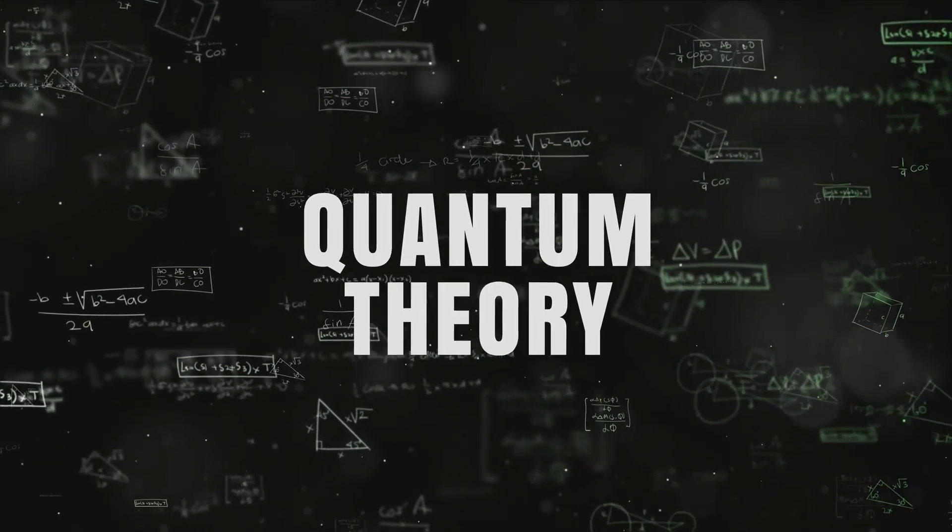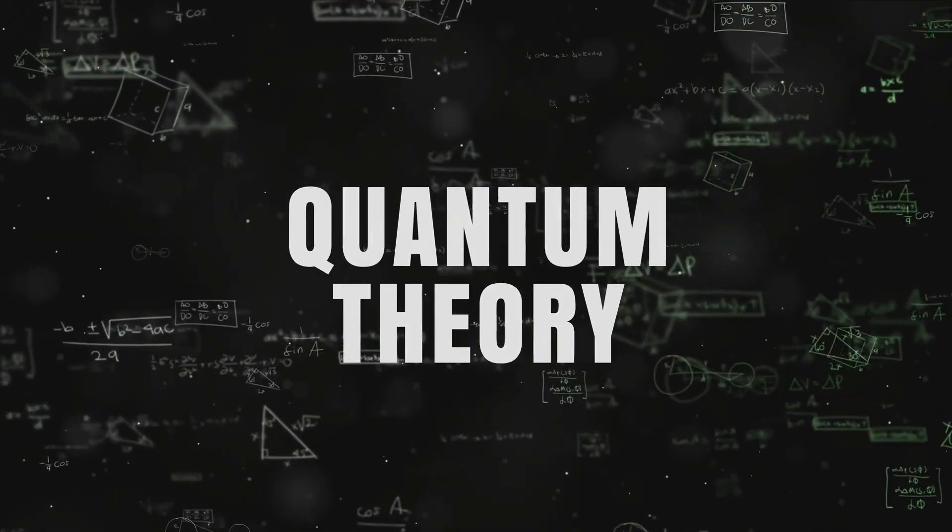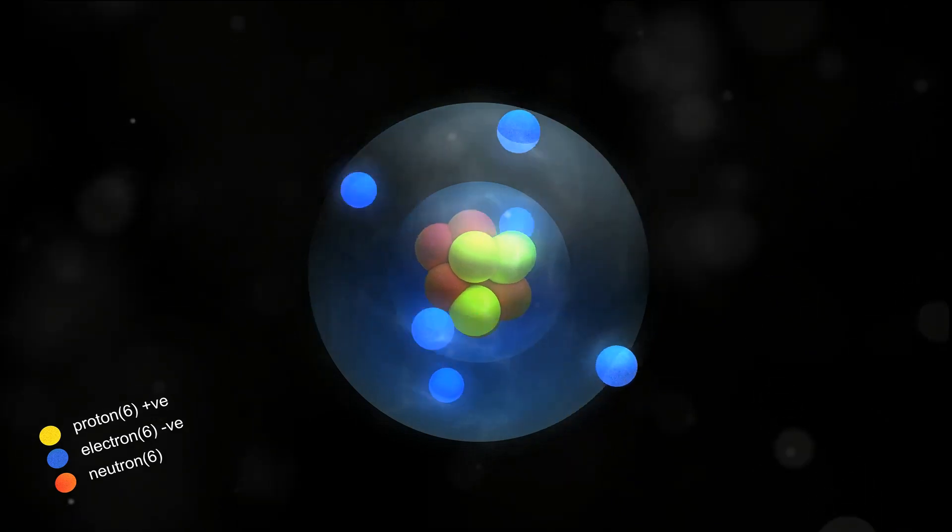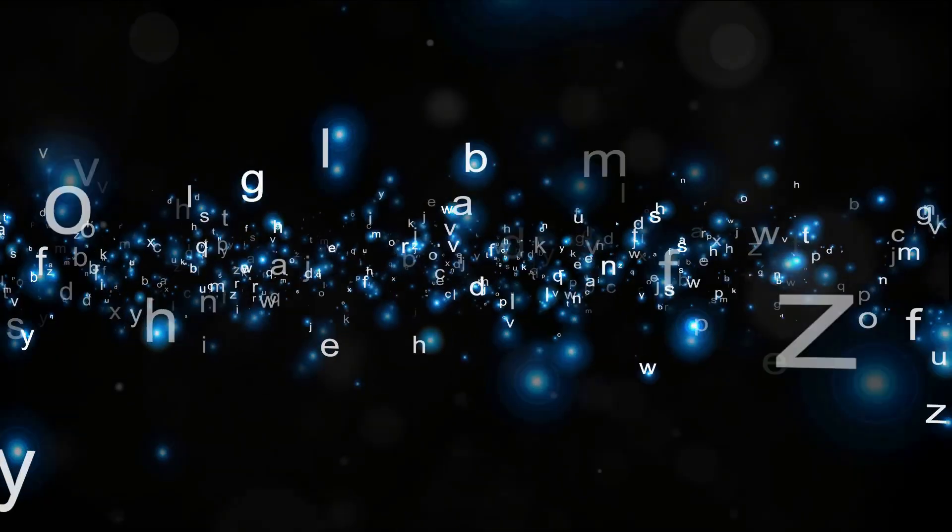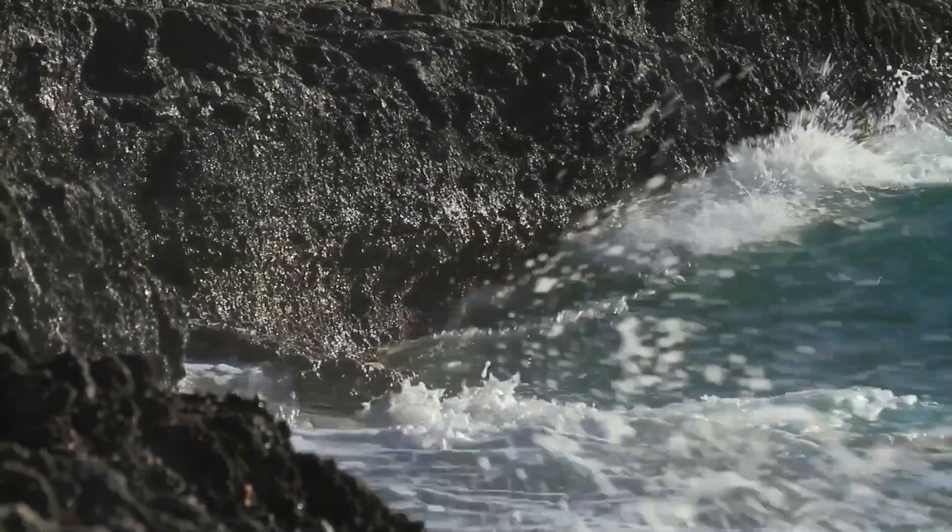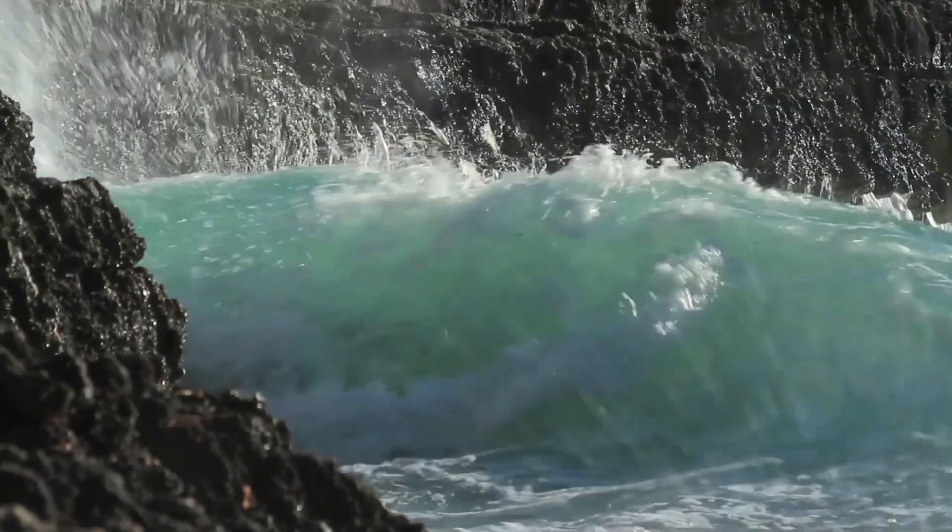At the heart of the quantum realm are atoms, the building blocks of matter. These tiny particles are made up of even smaller particles called protons, neutrons, and electrons. But as we delve deeper into the quantum realm, we discover that these particles are not solid objects but rather waves of probability.